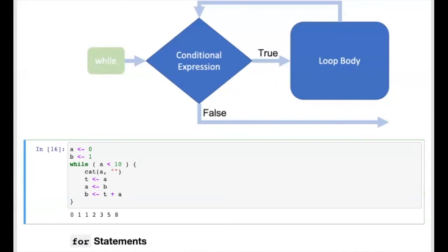Running this code block, we see the loop executed its body seven times, outputting the values 0, 1, 1, 2, 3, 5, and 8. Every element is the sum of the previous two, with the first two defined as 0 and 1. In the last iteration, a started at 8 and was updated to 13 (the sum of 5 and 8). The loop then re-evaluated the condition, saw that 13 is not less than 10, and exited without executing the loop body again.